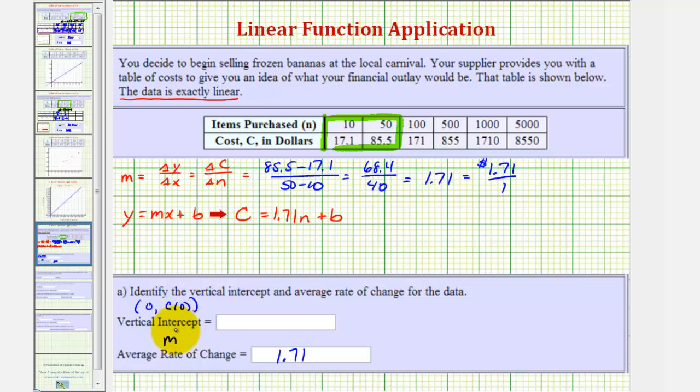So if we use this first ordered pair, we'd substitute 17.1 for c, and 10 for n. This would give us 17.1 equals 1.71 times 10 plus b. So we have 17.1 equals 17.1 plus b. Notice in this case, if we subtract 17.1 from both sides, we have b equals zero. So in this case, the y intercept, or the vertical intercept, would be the point zero, comma, zero.